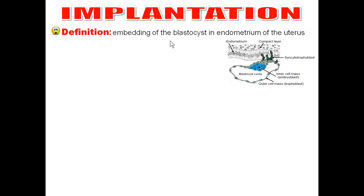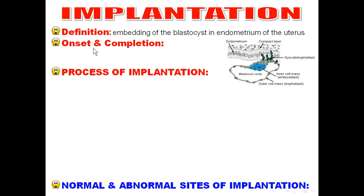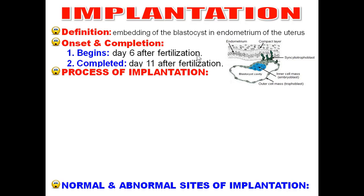What is implantation? Implantation is embedding the blastocyst into the endometrium, inside the endometrium of the uterus. I will talk about onset, completion, process of implantation, and the sites of implantation. Onset: it begins on day 6 after fertilization and is completed on day 11 after fertilization.